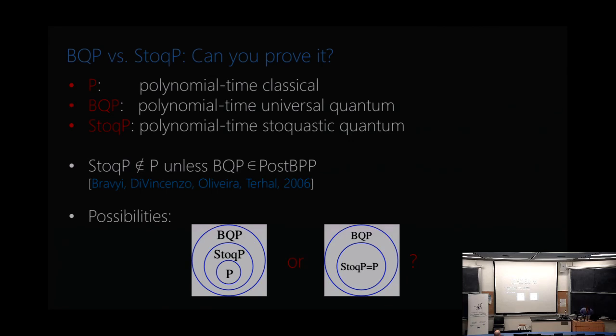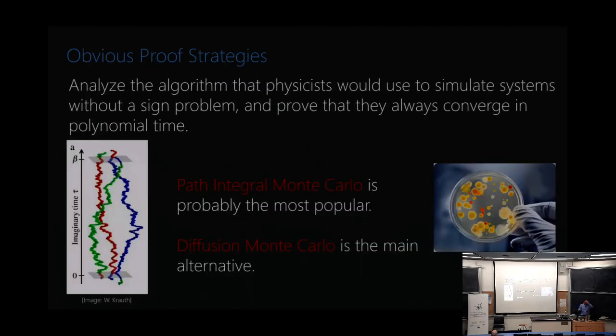And there's actually good complexity theoretic evidence that stoquastic P is not equal to BQP unless BQP is contained in post-BPP which is generally thought to not be true. So there's good reasons to believe that stoquastic quantum computers are less powerful than general purpose quantum computers. But the remaining possibilities are that they're intermediate in power between universal quantum computers and ordinary classical computers or that they're no more powerful than ordinary classical computers.